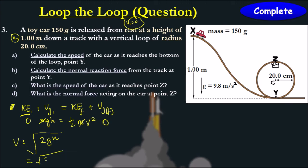So 2 times 9.8 times height of 1. We get a velocity of approximately 4.43 meters per second when we reach this point at y.